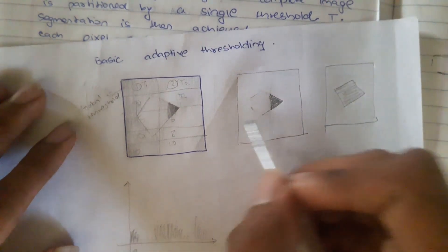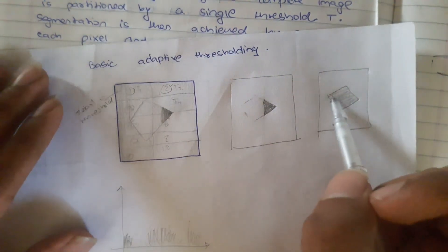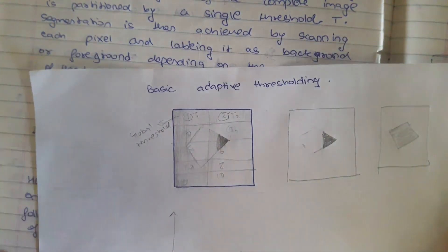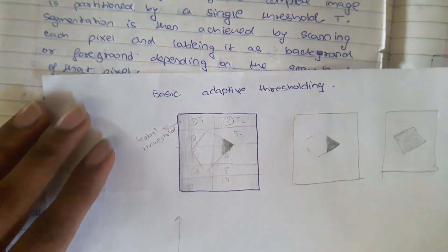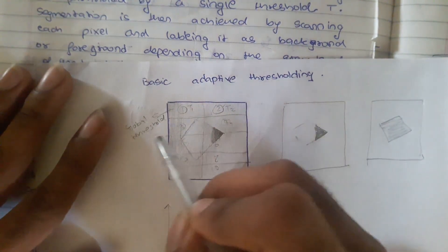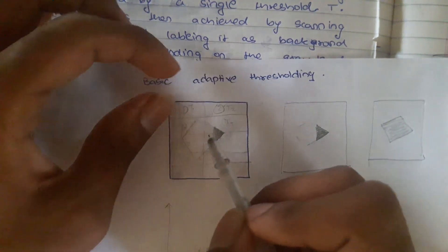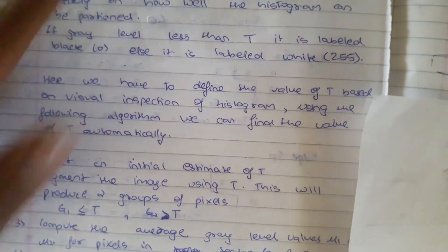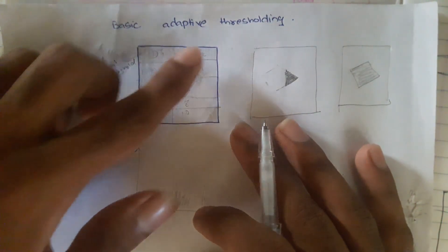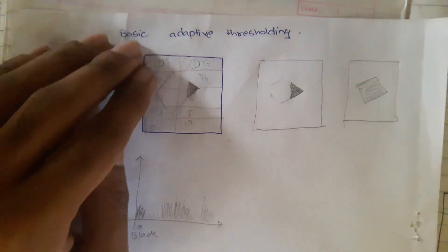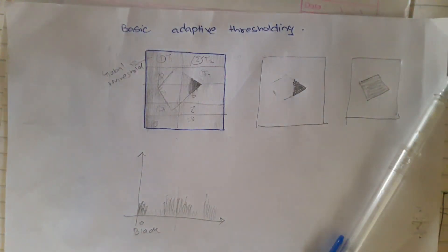When you combine all of them, that will give you the output. Doing this also may not give you a perfect output, but I explained it with the help of an example so you can visualize how things work. This is the basics of adaptive thresholding — you split the image into small sub-images and then perform global thresholding on each. You use the same algorithm as in global processing, but on the sub-images, and when you combine all of them you get your result. This is what is known as basic adaptive thresholding. Thank you so much for watching this video.